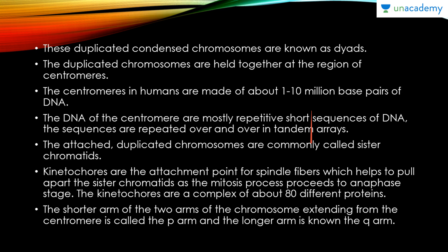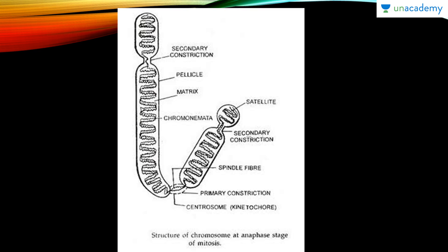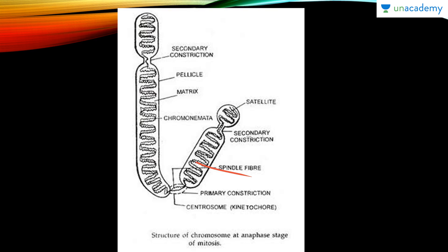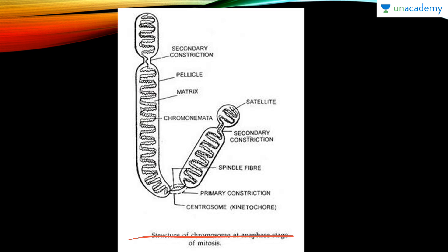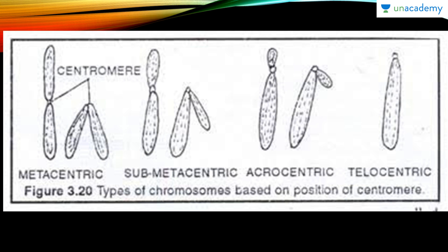The shorter arm of the chromosome extending from the centromere is termed the P arm and the longer arm is the Q arm. In the diagram we can see the pellicle as the outer covering, the matrix inside, secondary constrictions near the satellite portion, the spindle fiber, and the centromere or kinetochore — which helps in separation during anaphase.